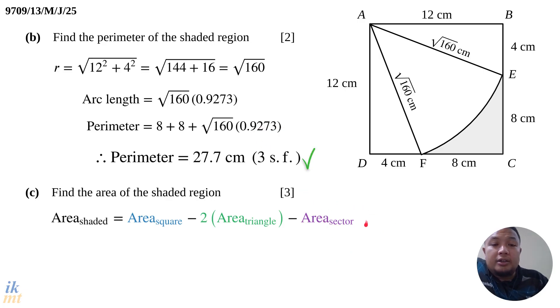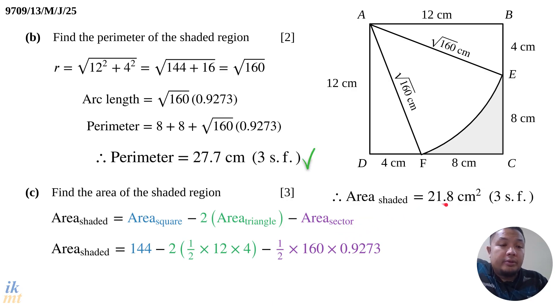All the information we need are available. All we need to do is carefully substitute the values into the formula and press the calculator. The area of the sector we use the formula half r squared theta, and theta must be in radians, which we already know. Press carefully, put brackets wherever you need to not make a mistake. If you do that carefully, you should get 21.8 cm squared to 3 significant figures. If you get 27.7 for perimeter and 21.8 for area, you have done a very good job.